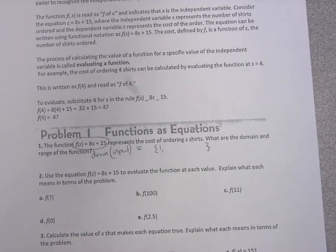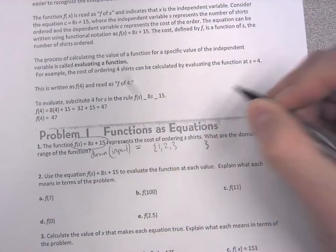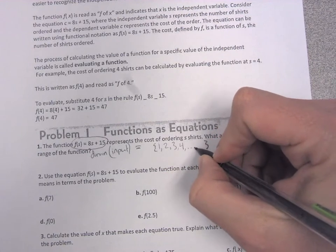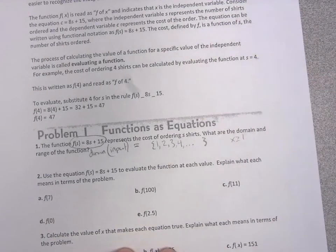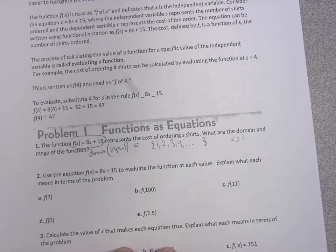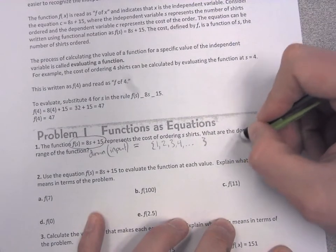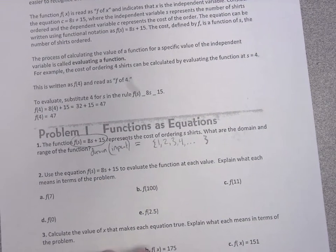So the domain would be one, two, three, four, and so on. We don't want to use the phrase 'all real numbers' because negatives don't count, and decimals and fractions don't count in this context. We also wouldn't say x greater than or equal to one, because that includes in-betweens like 2.5, 3.7, and 4.1. We don't want 4.1 shirts. We only want a list of whole numbers that are positive starting from one. That would be our domain.